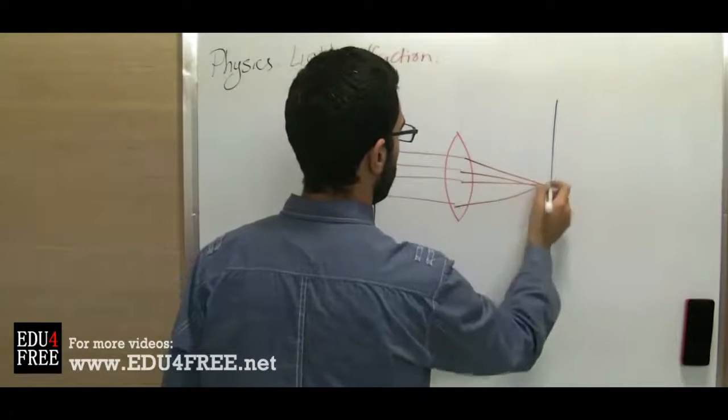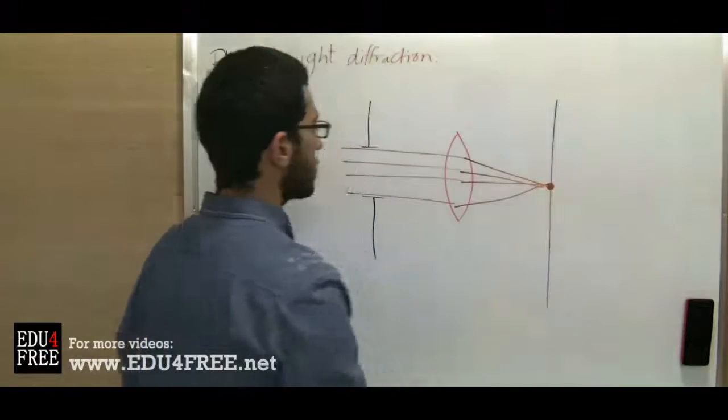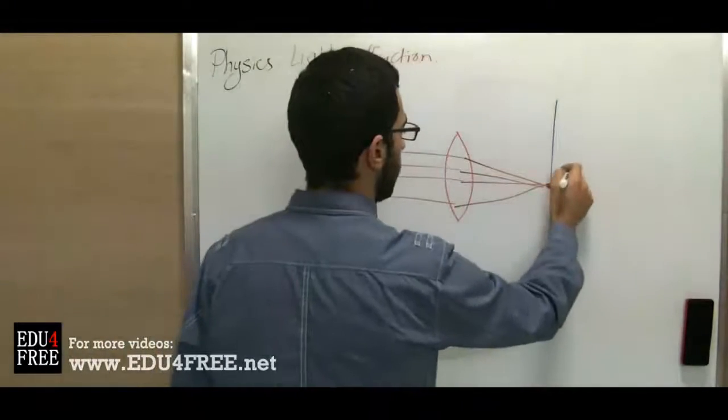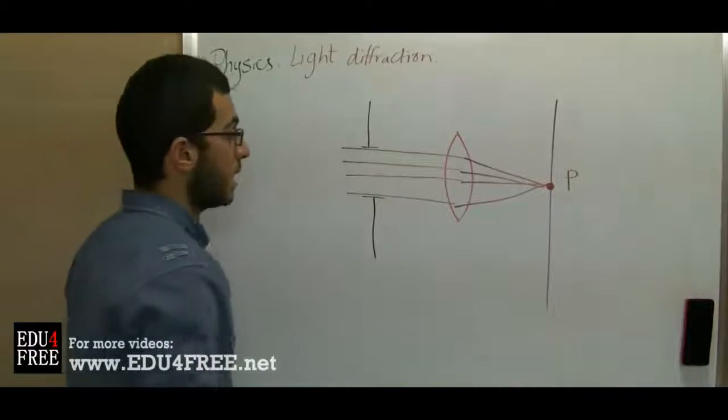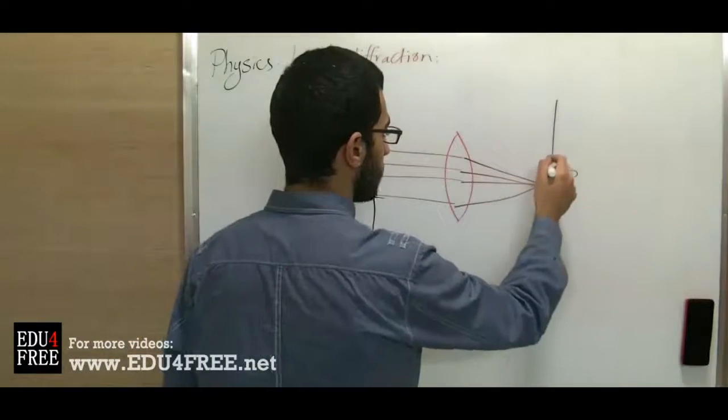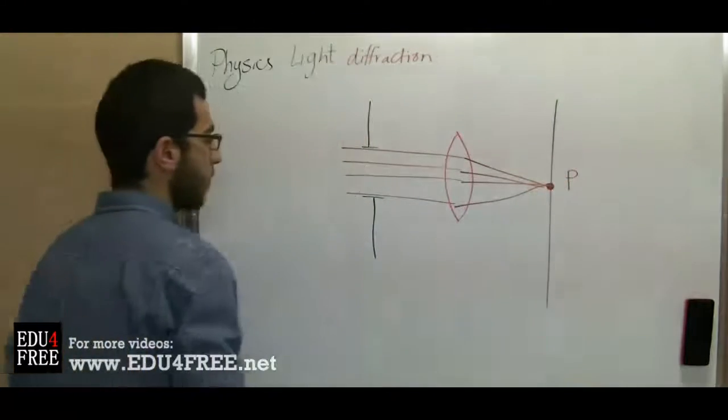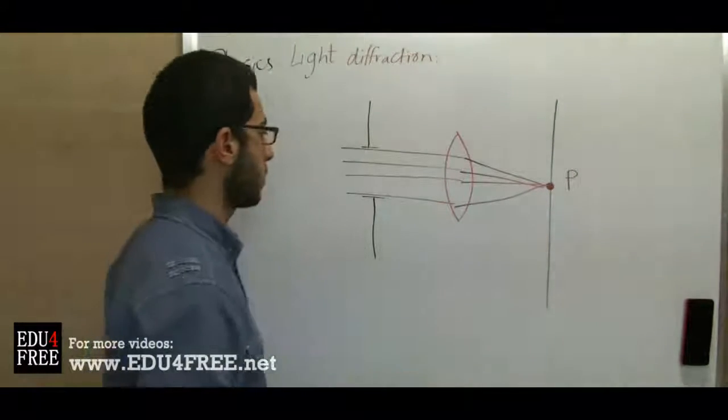it diffracts until it reaches the point. So this is constructive interference, and we get a bright spot at that part or a bright fringe at the center of the circle.